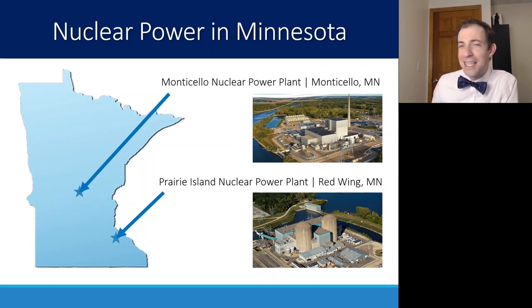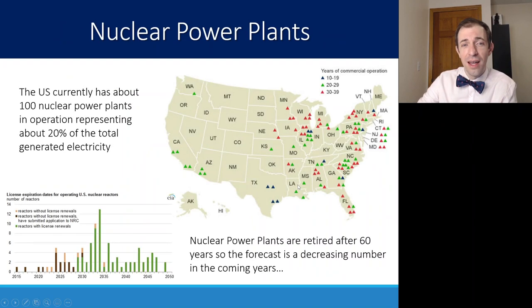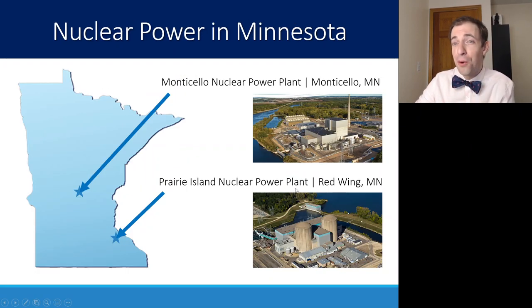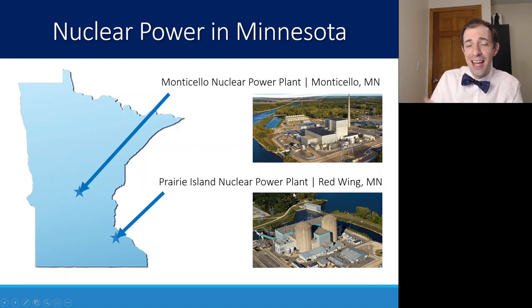Here are a couple power plants in Minnesota. The Monticello nuclear power plant and the Prairie Island nuclear power plant. You'll notice that both of these are next to bodies of water. That water is used for the cooling aspect of these nuclear power plants so they don't melt down and they can stay at a stable temperature. You'll notice that neither of these have that classic nuclear power plant look with that cooling tower, so it's possible you've driven past one and didn't even know that it was a nuclear power plant.